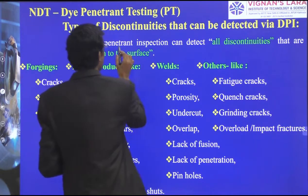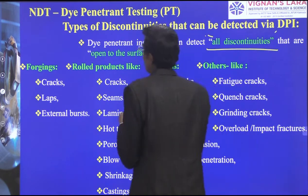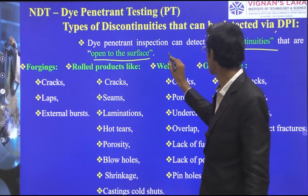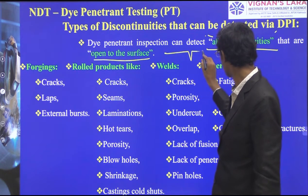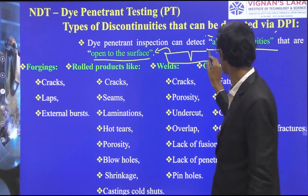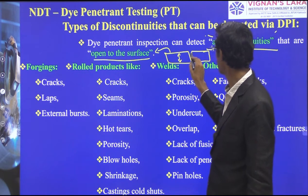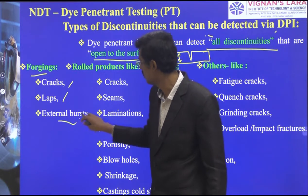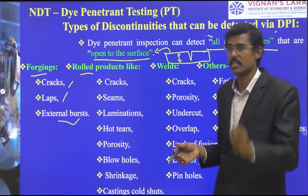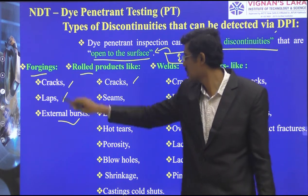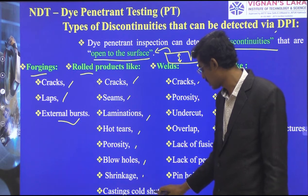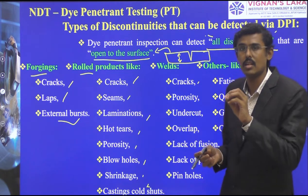Di-penetrant inspection can detect all discontinuities that are open to the surface. There must be an opening on the surface. When the openings are related to the surface, we can detect them. In forging and casting, we may find cracks, laps, or external pits. In rolled products, surface cracks are detectable. Weld cracks are also available. Seams, laminations, hot tearings, porosity, blow holes, sinkages, cold shuts — these are casting defects which are related to the surface. In welds, cracks, porosity, undercuts, overlap, lack of fusion, lack of penetration, and pinholes are all surface discontinuities.